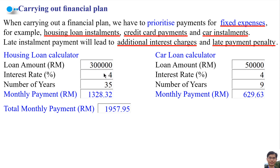For a government loan, the interest rate is about 4% and the maximum loan period is 35 years. The monthly payment for the house loan is 1,228.32 ringgit. For a car priced at 50,000 ringgit with an interest rate of 4% and a maximum loan period of 9 years, the monthly payment is 628.63 ringgit. The total monthly payment for both the house and car loans is 1,857.95 ringgit.